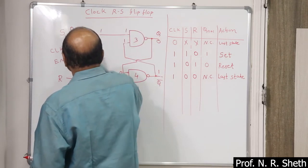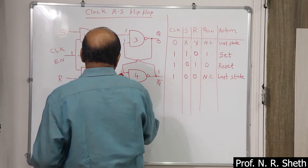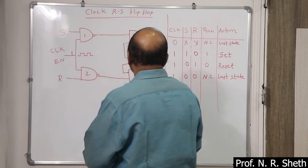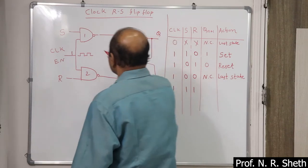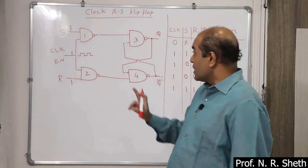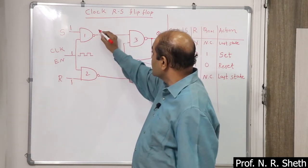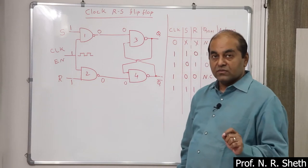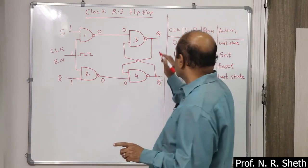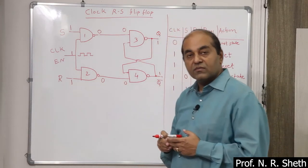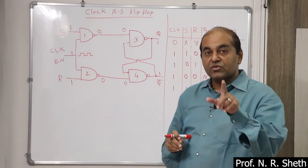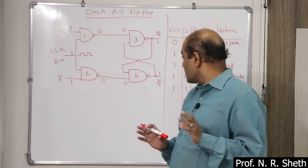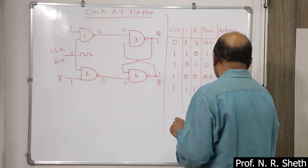The last condition: clock is present, S is 1, and R is also 1. Both inputs of gate 1 and gate 2 are high, so both outputs are 0. In NAND gate when any input is 0, output is 1, so both Q is 1 and Q bar is also 1. This is against the basic condition of the flip-flop — Q must be the complement of Q bar. So this is the forbidden state.